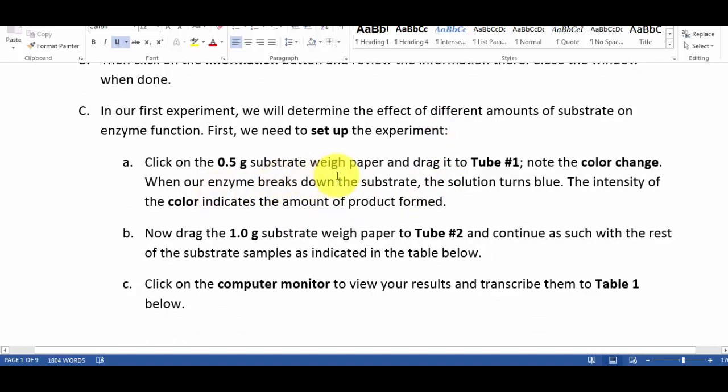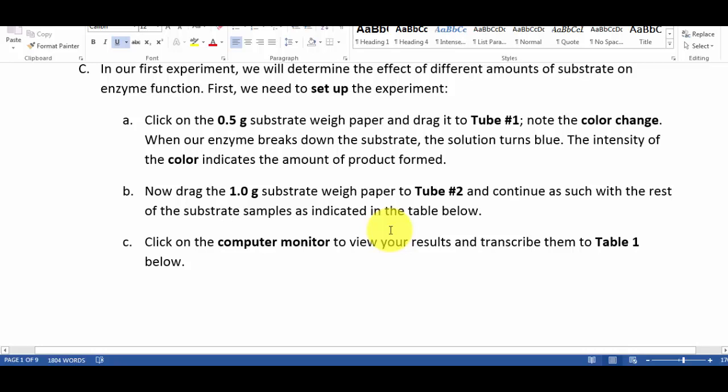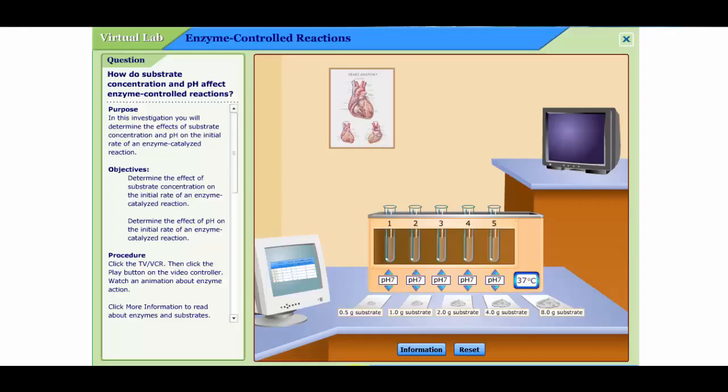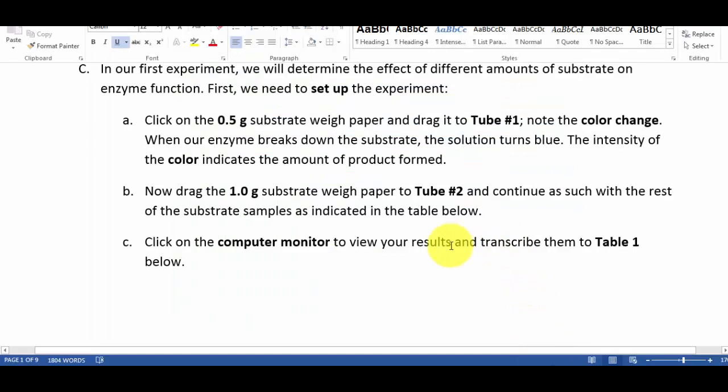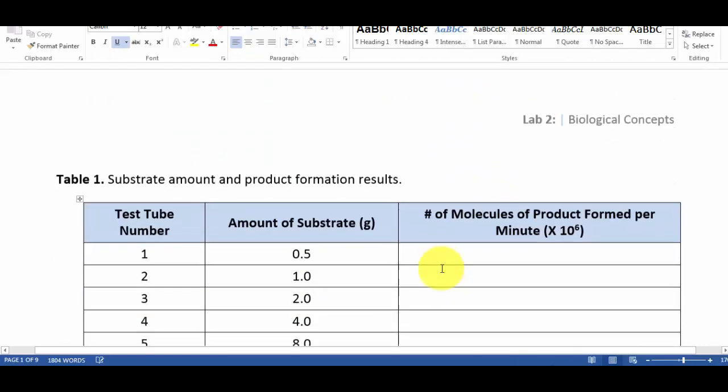Click on the 5 grams, drag the one to tube number two and continue with the rest. That's pretty easy, drop them in there we go. And then you hit the little button.